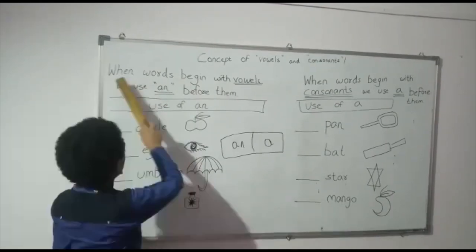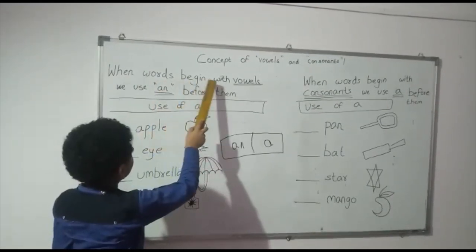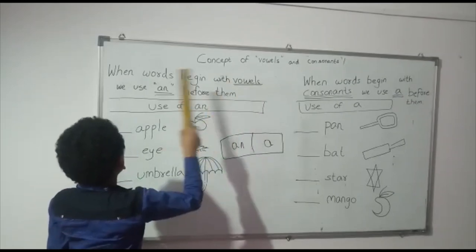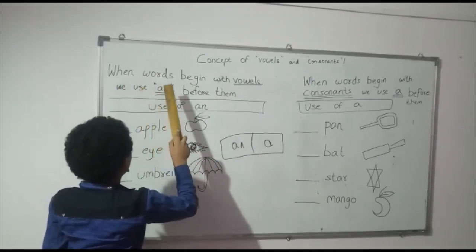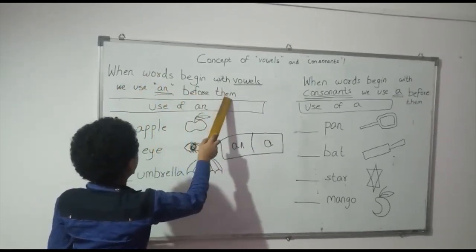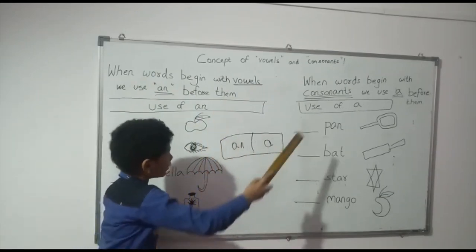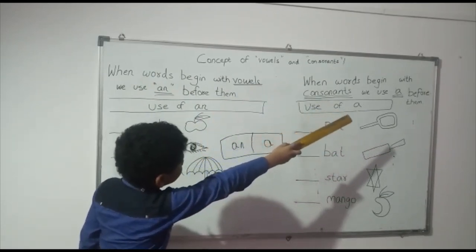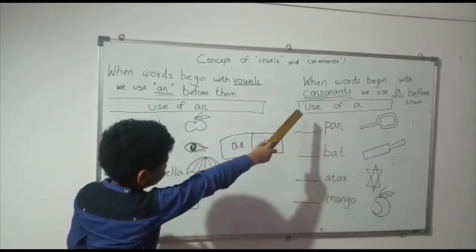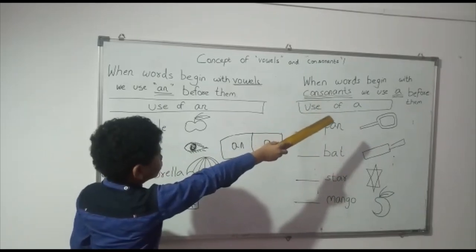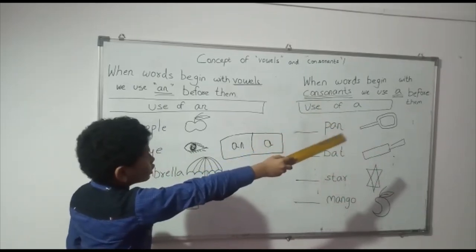See here. When words start from vowels, we use AN before them. And when words start from consonants, we use A before them.